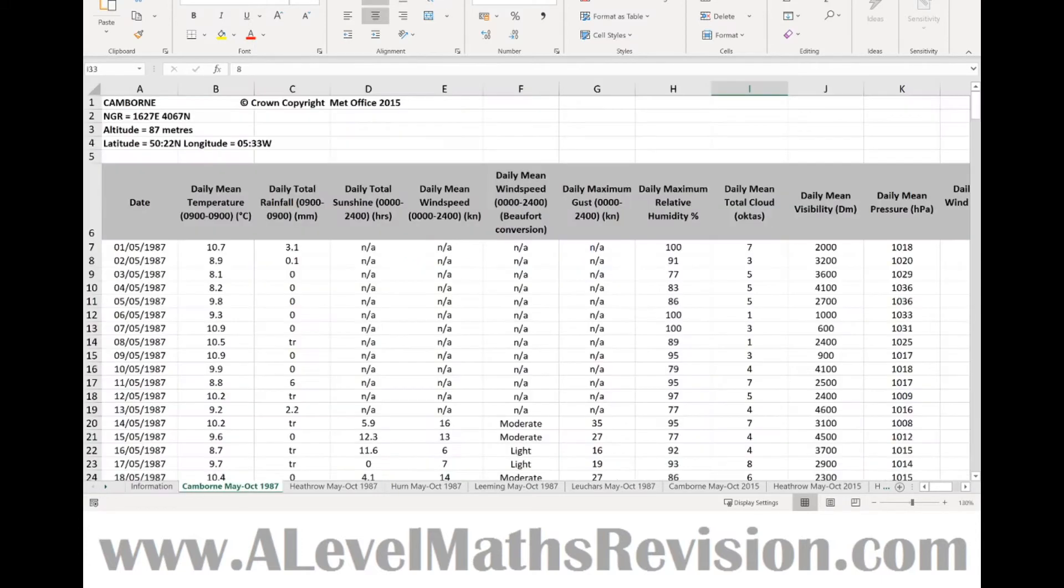Cloud cover is the fraction of celestial dome covered by cloud. So let's have a look at a tab. We can see here cloud cover, daily mean total cloud here. It's measured in eighths, and they take integer values. So you'd be forgiven for thinking there were eight outcomes if it's measured in eighths. However, there's nine, because zero is also an option, from zero eighths all the way up to eight eighths.